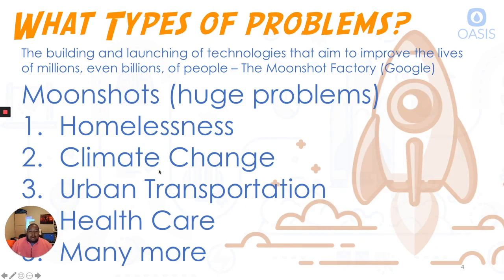So what types of problems are categorized as Moonshots? If we think about these huge problems that affect society on a grand scale, we're talking about homelessness, climate change, urban transportation, healthcare, and really anything on that scale is considered a Moonshot problem. So if we're talking about what the challenge is or what a Moonshot is, we really need something on that scale.